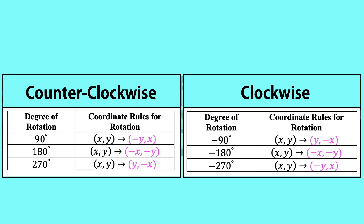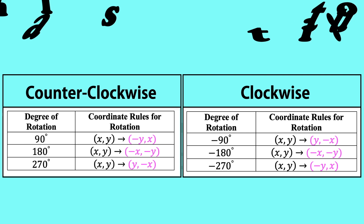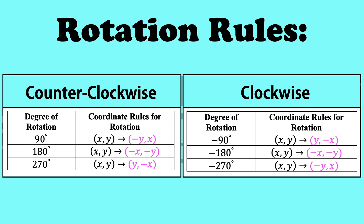We just derived the rules for rotating 90 degrees counterclockwise, and the rest of the rotation rules can be derived the same way. On the left we have all the counterclockwise rules for positive degree rotations: 90, 180, and 270 degrees. On the right we have the clockwise rules for negative degree values: -90, -180, and -270 degrees.